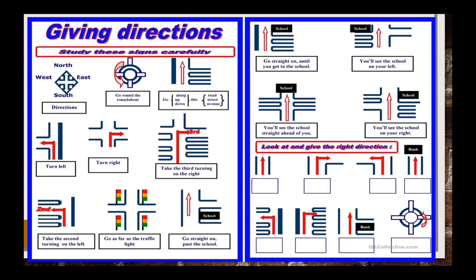Take the first block on the right. Lalu kemudian yang sebelah kiri — ini adalah belokan pertama ke kanan, dan yang ketiga ini adalah belokan kiri yang pertama. Jadi take the first block on the left. Lalu ada sebuah panah lurus ke depan menuju sebuah bank — kira-kira jawabannya apa? Silahkan kalian coba.